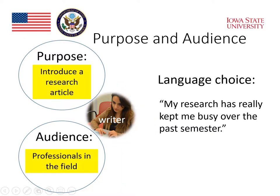Let's change the audience and purpose to one that is very important also for graduate students. What if the audience is professionals in the field and the purpose is introducing research articles? Our graduate students, after they do their research, want to be able to write an article and submit it to a journal so it will get published. So the writer is the same — she's talking about her research, but the purpose and the audience are different. What if she chooses to introduce her research by saying, 'My research has really kept me busy over the past semester.' Will that work? Is that a good way to start a research article?